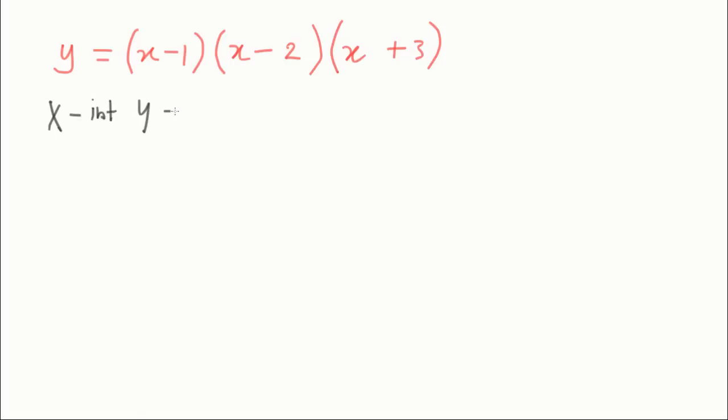To find the x-intercepts, as always, let y equals 0. No matter what the equation is, this is always the way of finding the x-intercepts. So if you let 0 equal all of that, x minus 1, x minus 2, bracket x plus 3.